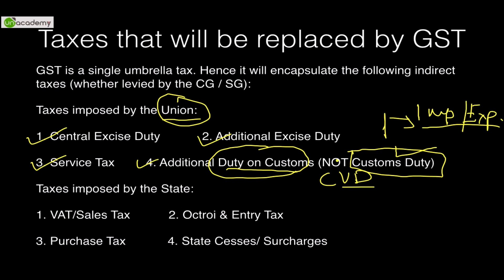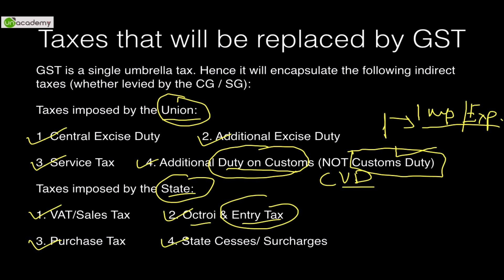After implementation of GST, there will be a GST rate and a customs duty rate. Taxes imposed by state governments that will be replaced include VAT or sales tax, octroi (also known as chungi or entry tax), purchase tax, and any kind of state cesses and surcharges. Everything will be replaced and one tax — GST, Goods and Services Tax — will exist.